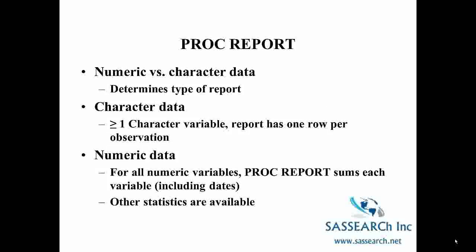The type of data you have determines the type of report SAS generates. If you're dealing with character data — one or more character variables — the report will appear as one row per observation, which is what we see with PROC PRINT. If your report uses all numeric variables, then PROC REPORT sums each variable, even dates. There are other statistics available that can be requested, and PROC REPORT does not show one row per observation when only numeric variables are listed.